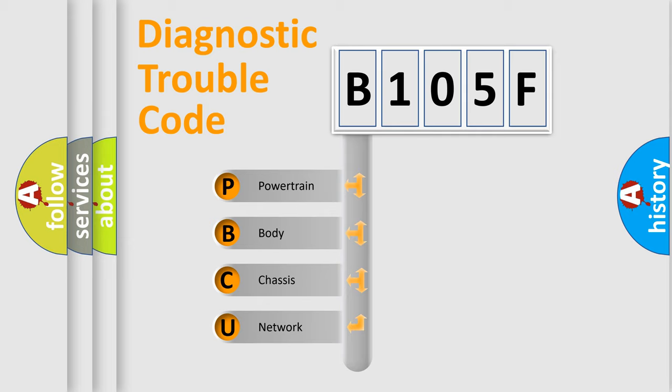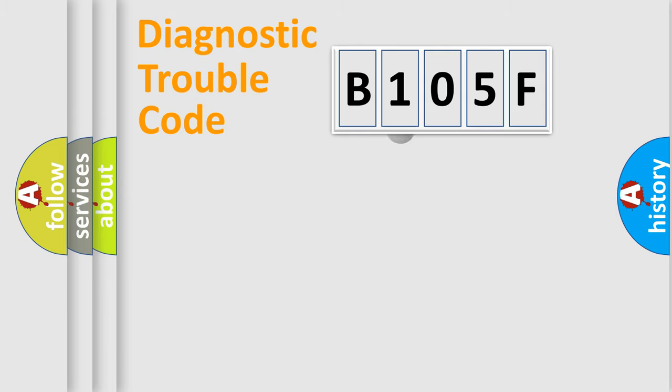We divide the electric system of automobile into four basic units: Powertrain, Body, Chassis, and Network. This distribution is defined in the first character code.